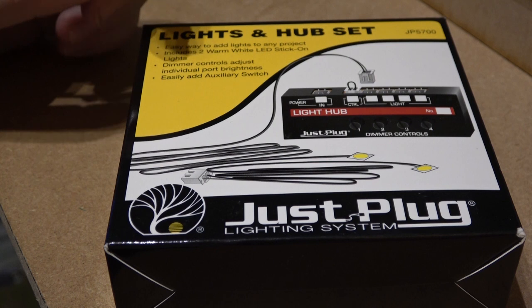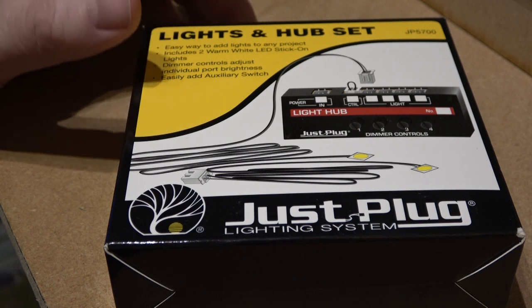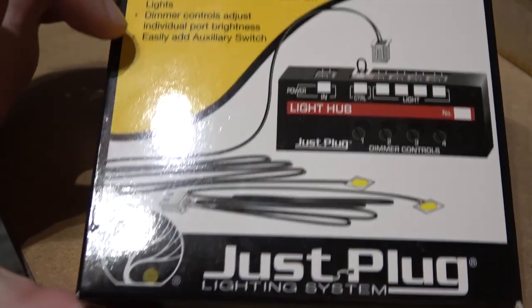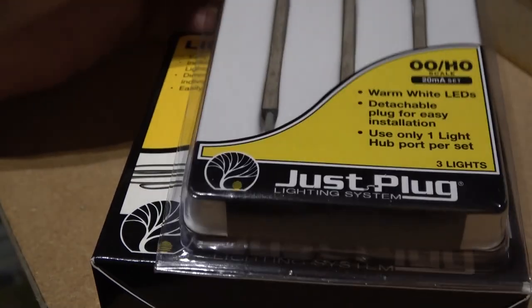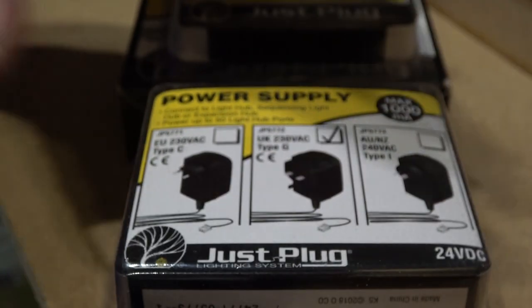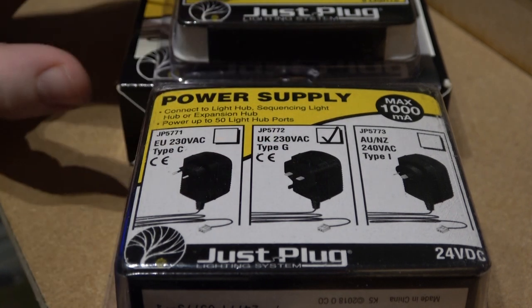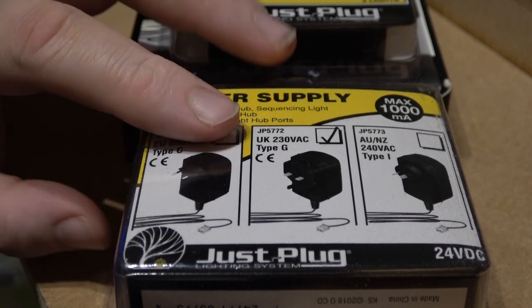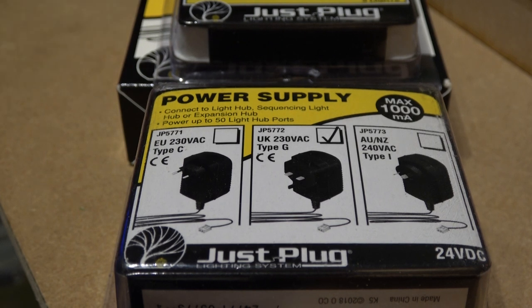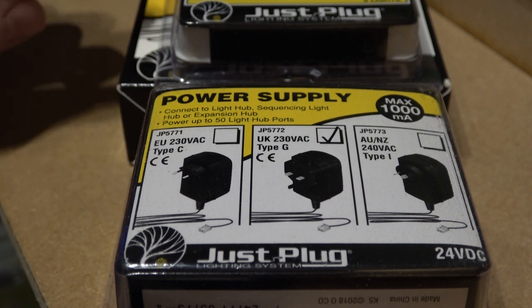This is the Woodland Scenics just plug system. It's sold by Bachmann in the UK, and I bought several bits of it. I bought this starter set, I also bought this set of lights, and I bought the UK power pack. In this I'll be looking at all three bits, having a quick little play, and then putting them back. All these bits are destined for Thumper Lane as I think it could do with a bit of light in it.